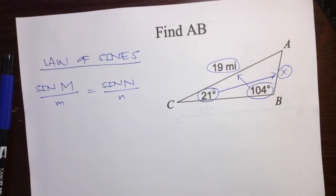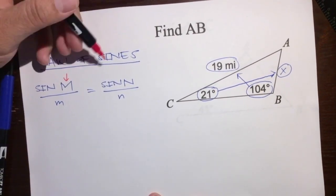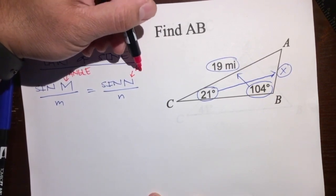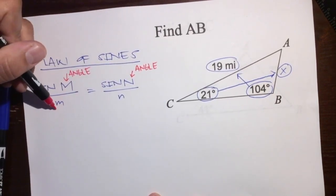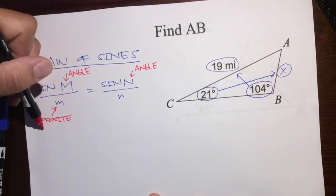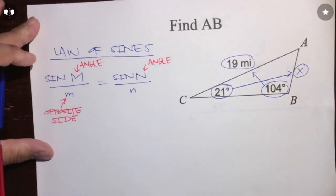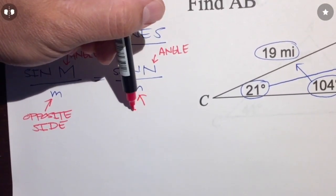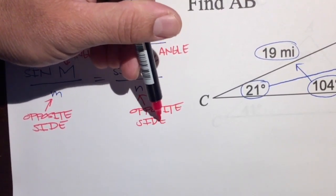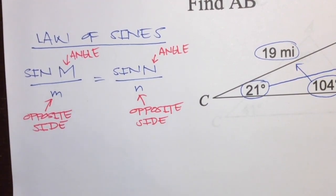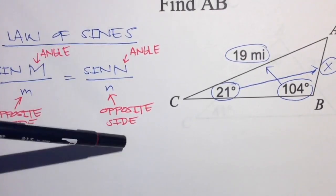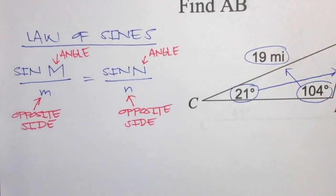So let's label this so we know what we're talking about: M is an angle, N is also an angle, little m is that angle's opposite side. Again, when you have a situation where you have an angle and its opposite side — like 21 degrees and its opposite side — and another angle and its opposite side, you can use the Law of Sines.